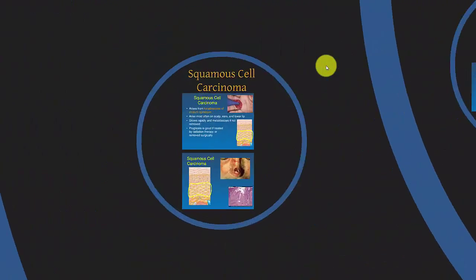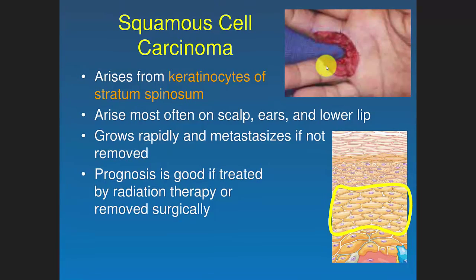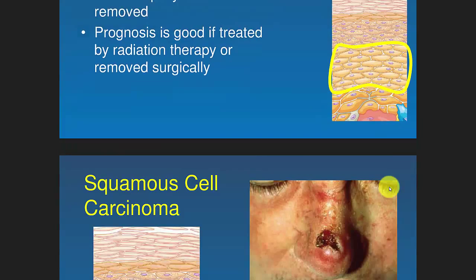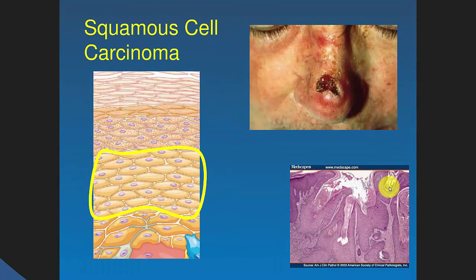Squamous cell carcinoma is kind of the middle of the road. It's cancer of the keratinocytes, commonly affecting the scalp, ears, and lower lip. It grows rapidly and will metastasize if not removed, though prognosis is usually pretty good. It is more likely to go deep, but since it's somewhat slow growing it doesn't metastasize as aggressively.